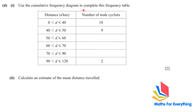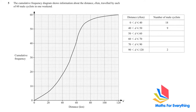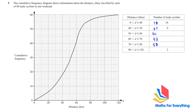Part D1: use the cumulative frequency diagram to complete the frequency table. The cumulative frequencies are: at 50 km → 27; at 60 km → 41; at 70 km → 53; at 90 km → 58. Subtracting consecutive values: 41 − 27 = 14; 53 − 41 = 12; 58 − 53 = 5. The table is now complete.